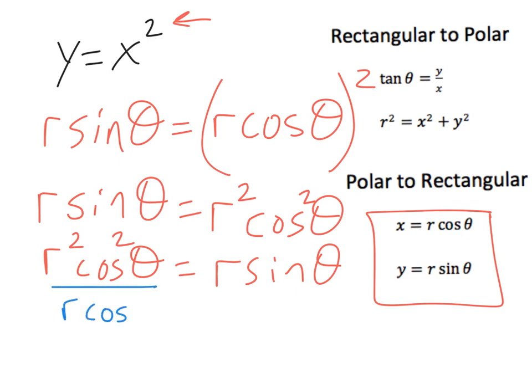Leaving me with r is equal to, the r is canceled, we had a sine theta over cosine squared theta.